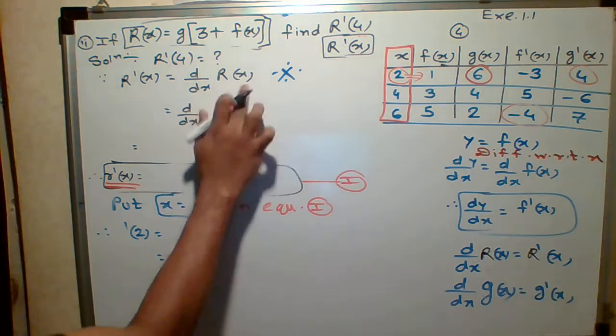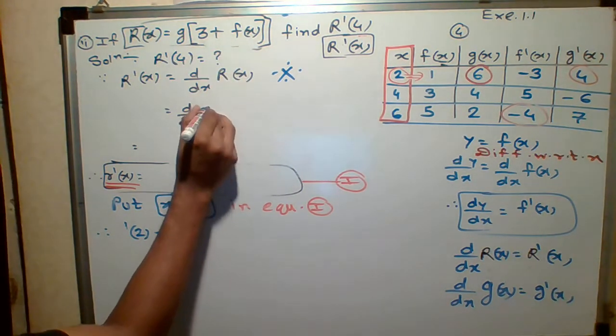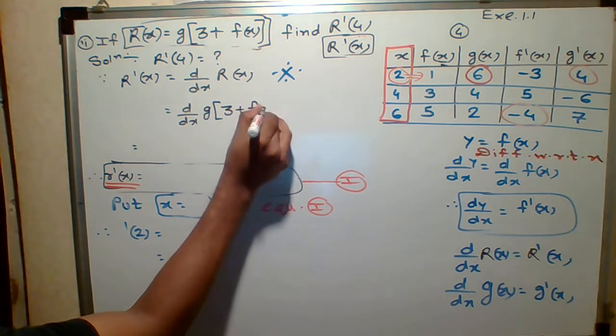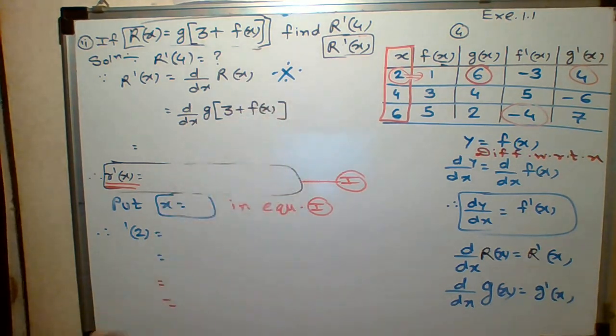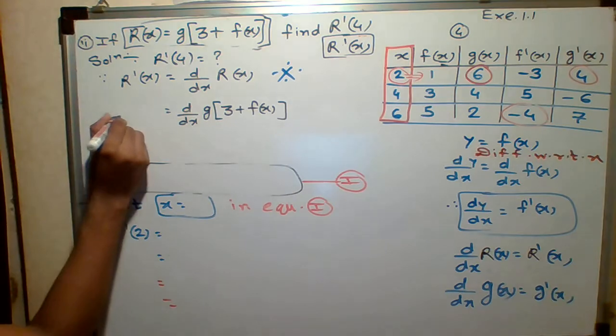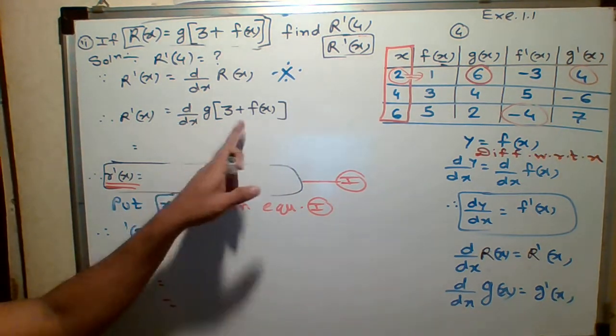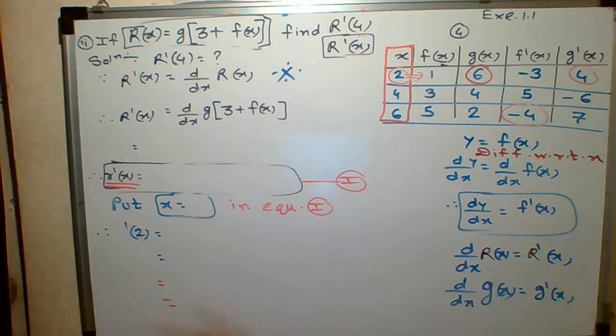Now what is R of X we have? See, R of X is what we have. R of X is G of 3 plus F of X. G of 3 plus F of X. And what is R dash of X? This is the first step. How do you do it now? How to solve?